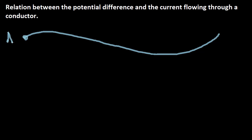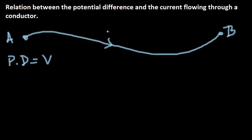This end we call A and the other end we shall call B. Between these two ends we are applying a potential difference. So the potential difference between points A and B is something — let us call that potential difference V. So the potential difference PD is equal to V in volts, and let us assume that some current I is flowing through this wire.